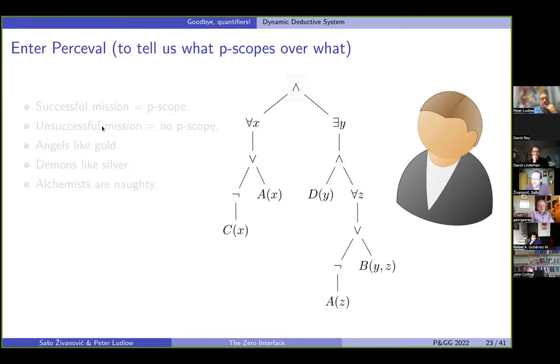This is our main protagonist, Percival. He's the guy who will tell us who pscopes over what. And how this will go about is we will send him on a mission, he will need to bring some plans from the premise into the target town. And if his mission is successful, we will say, Oh, God, okay, we've got pscope. If the mission is unsuccessful, no pscope. But now the thing is, his travels, obviously, there must be some obstacles. Otherwise, he would tell us nothing.